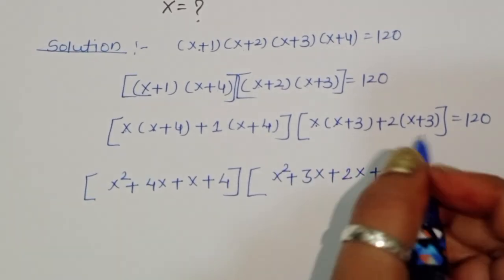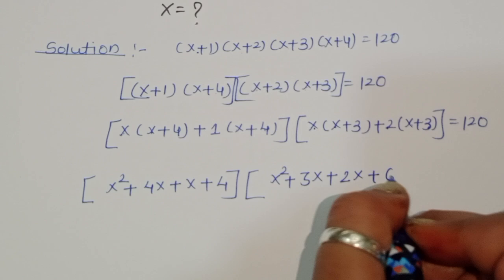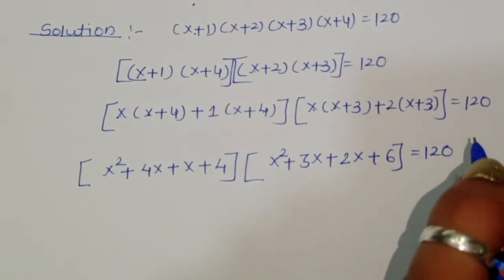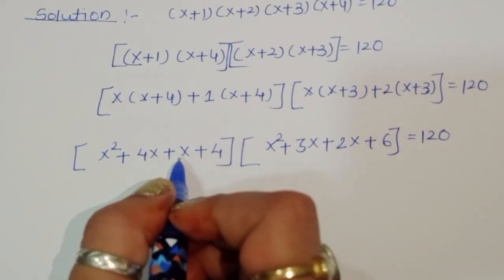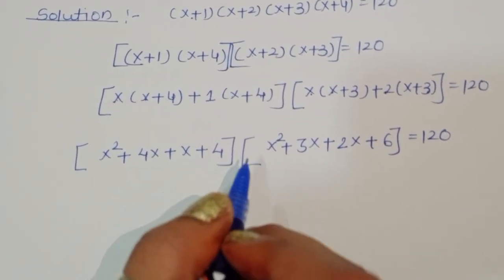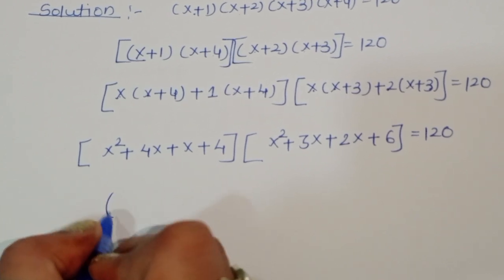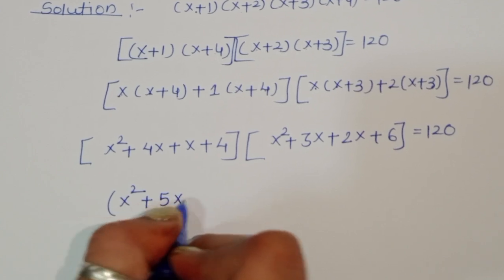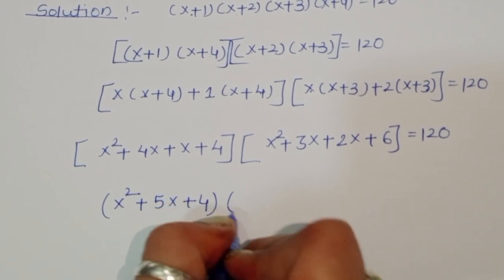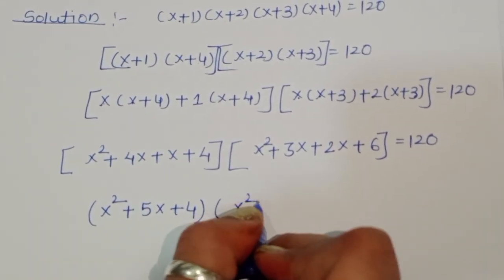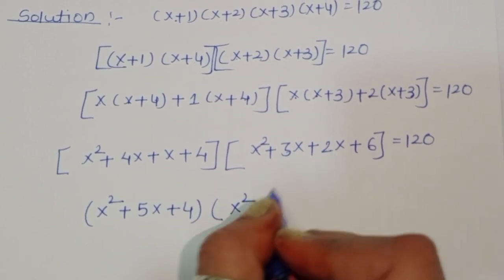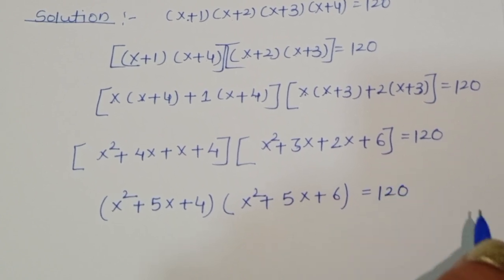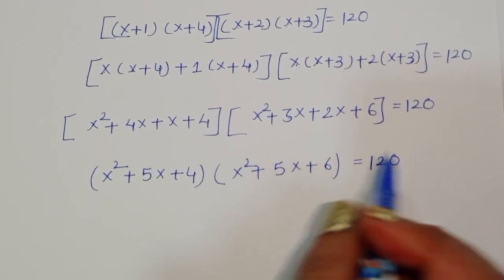So we get (x² + 5x + 4)(x² + 5x + 6) = 120. Notice that x² + 5x appears in both brackets as a common term.